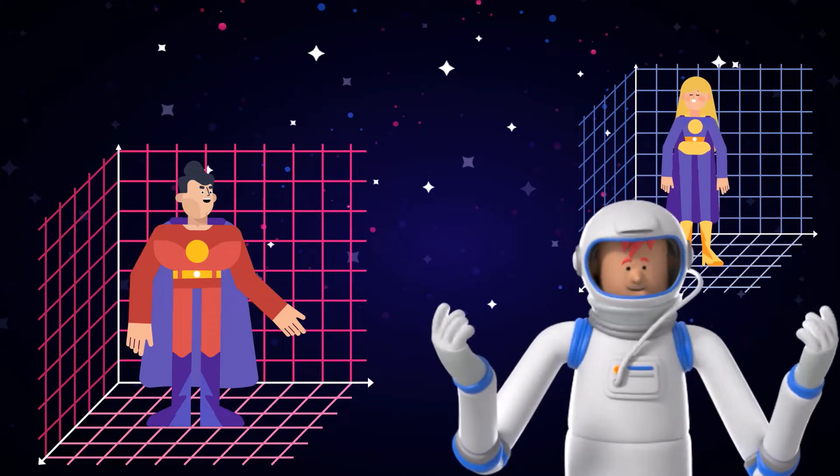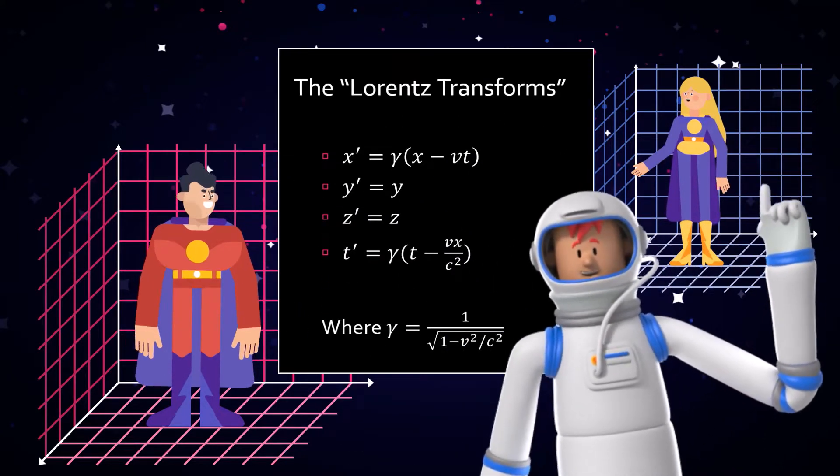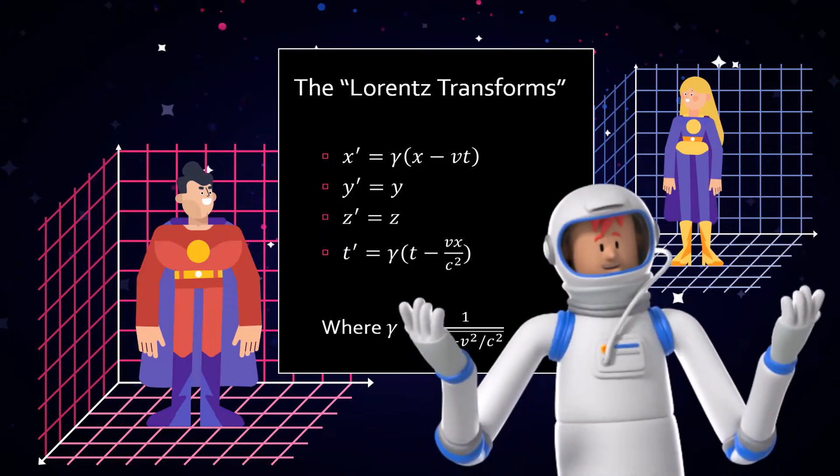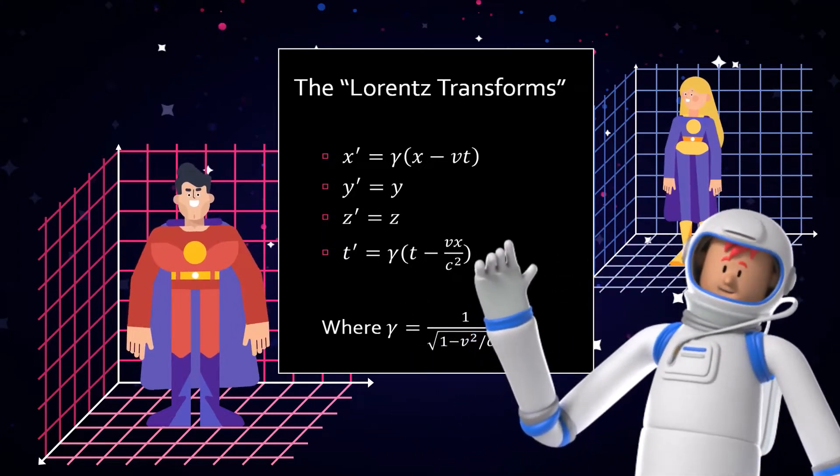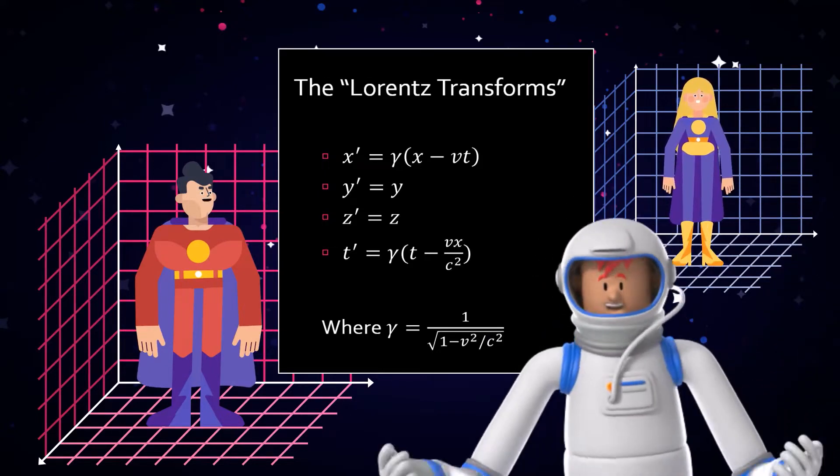Fortunately, Einstein figured out the mathematical equations that allow us to convert event coordinates seen in one observer's inertial frame to the coordinates that would be seen by another. These are the Lorentz transforms, named after the scientist who first proposed them.